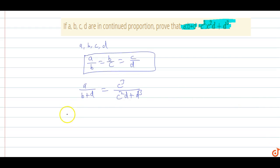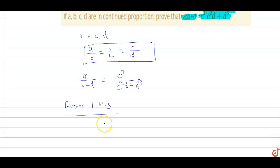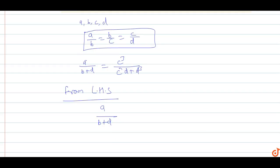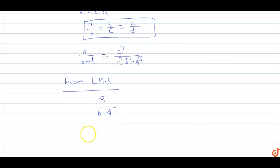From LHS, we take A upon B plus D. We can write it as 1 upon, divided by B by A plus D by A.